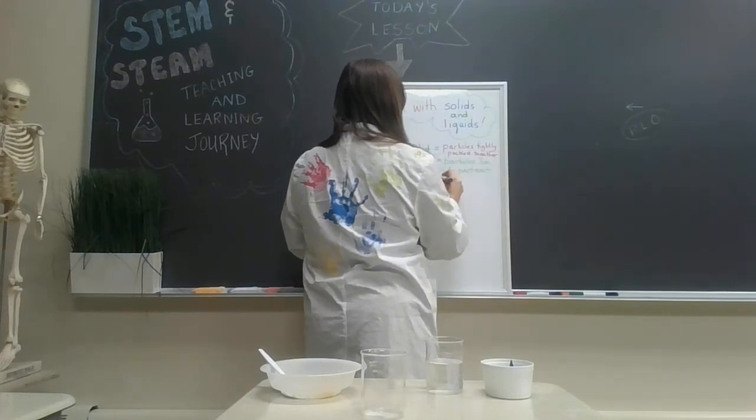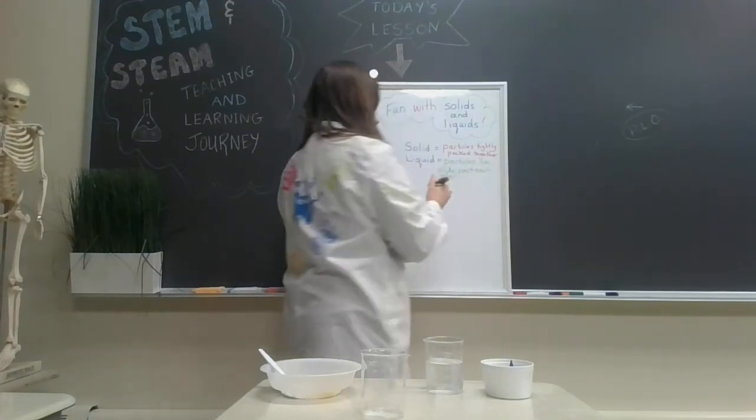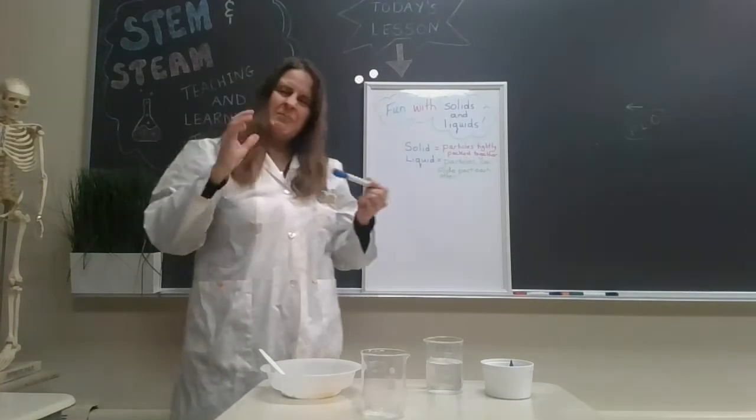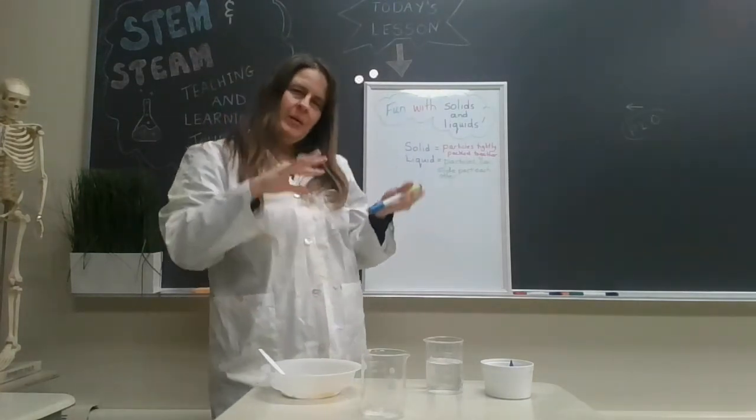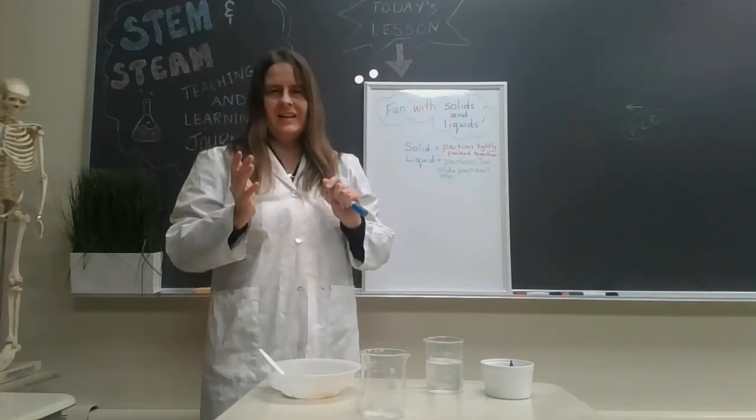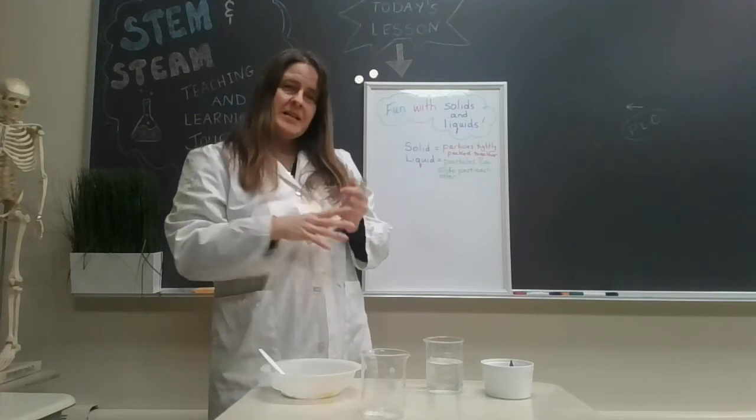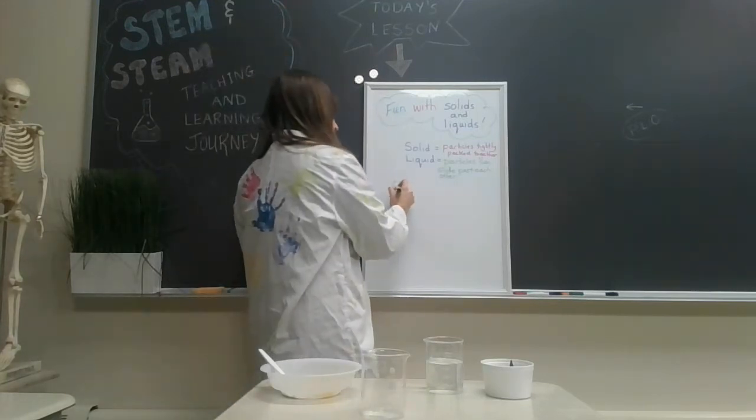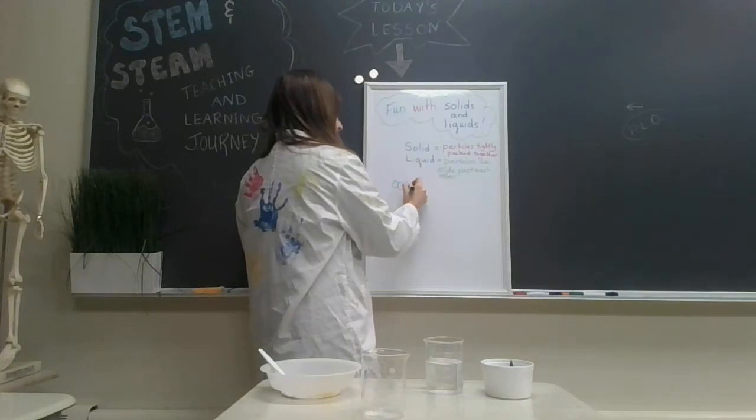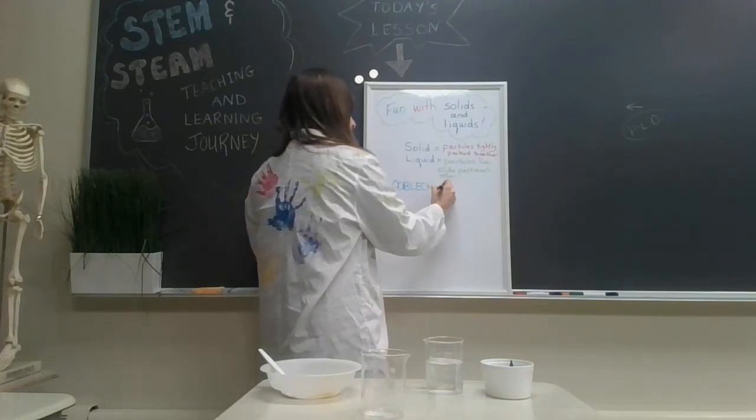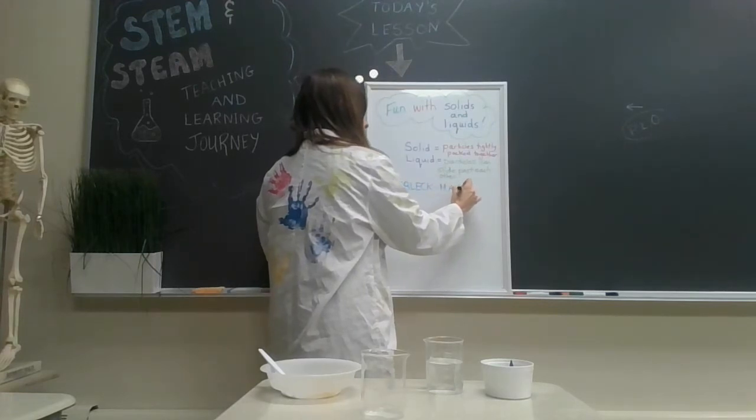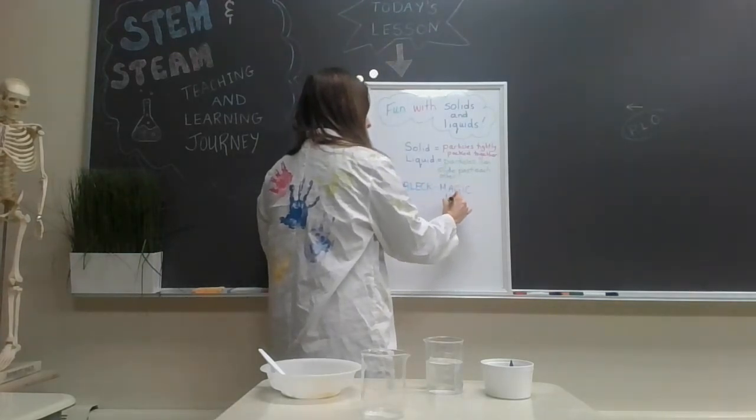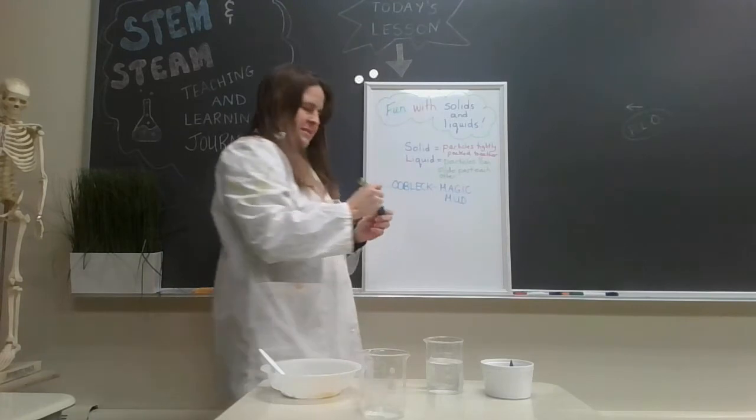Now, the cool thing is there are special things out there. They're a little bit like a solid and a little bit like a liquid. So today we're going to make something called oobleck, which is a really fun thing to make, and some people call it magic mud.